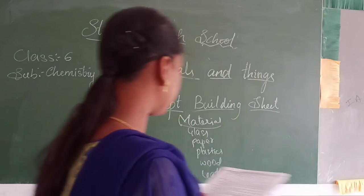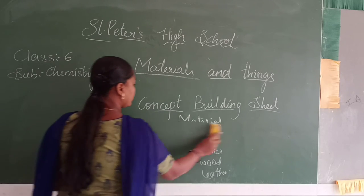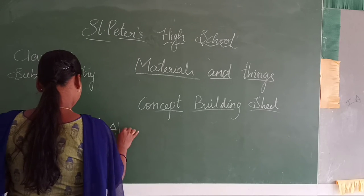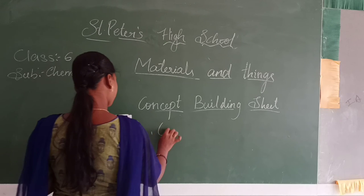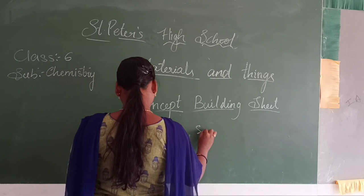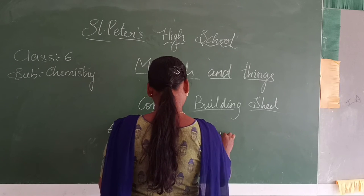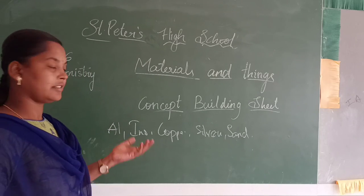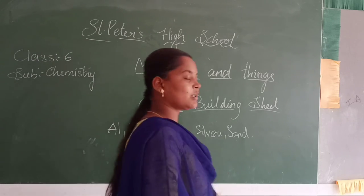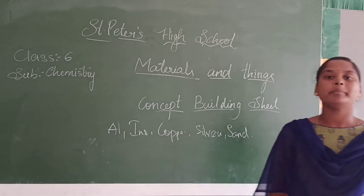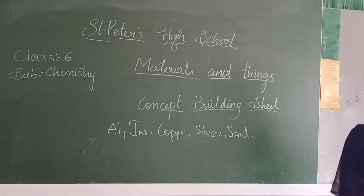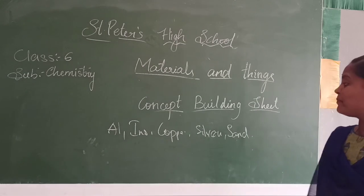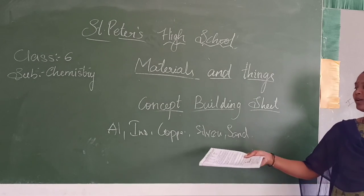We have been given four substances: aluminium, iron, copper, and sand. Aluminium, iron, and copper are all metals, whereas sand is the non-metal. Sand is a natural substance. So sand is the odd one out among all these things.